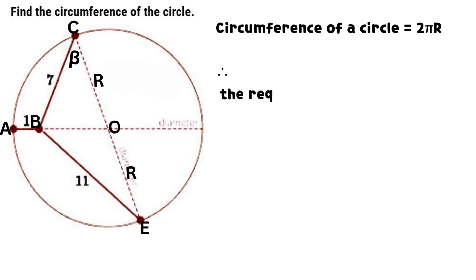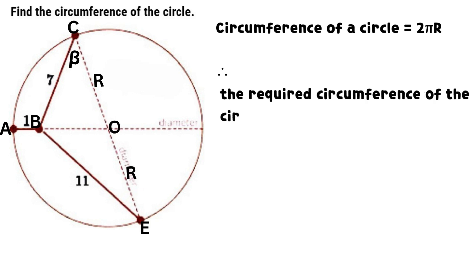The circumference of a circle equals the product of 2 and pi times R. Therefore, the required circumference of the circle equals 2 times the product of 7 and pi, which equals 14 pi units.